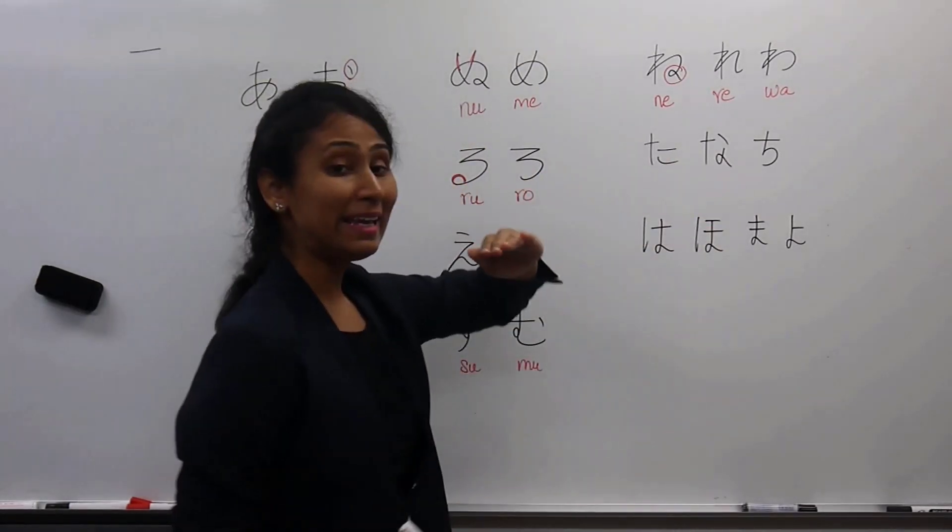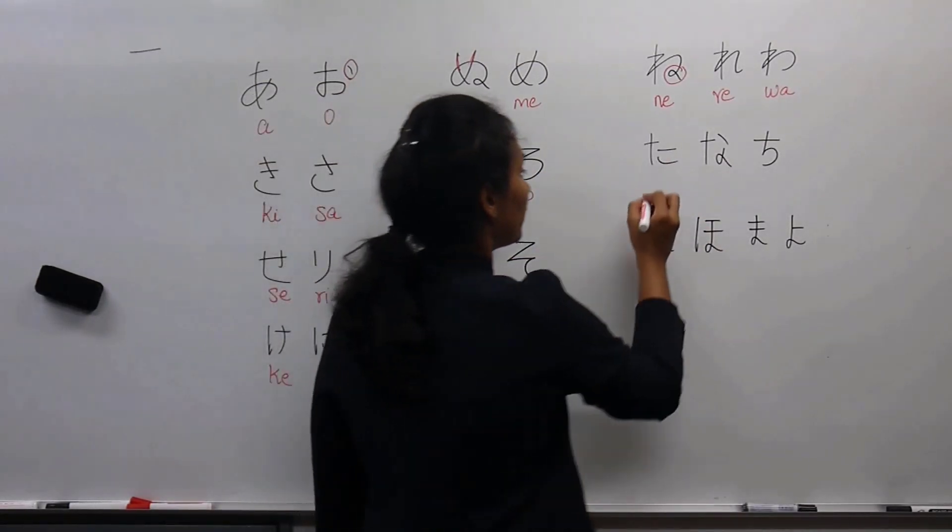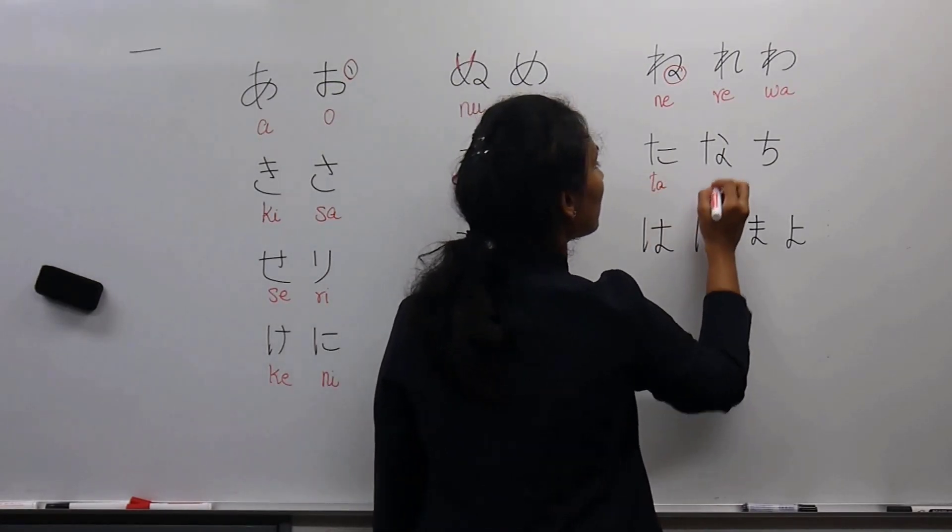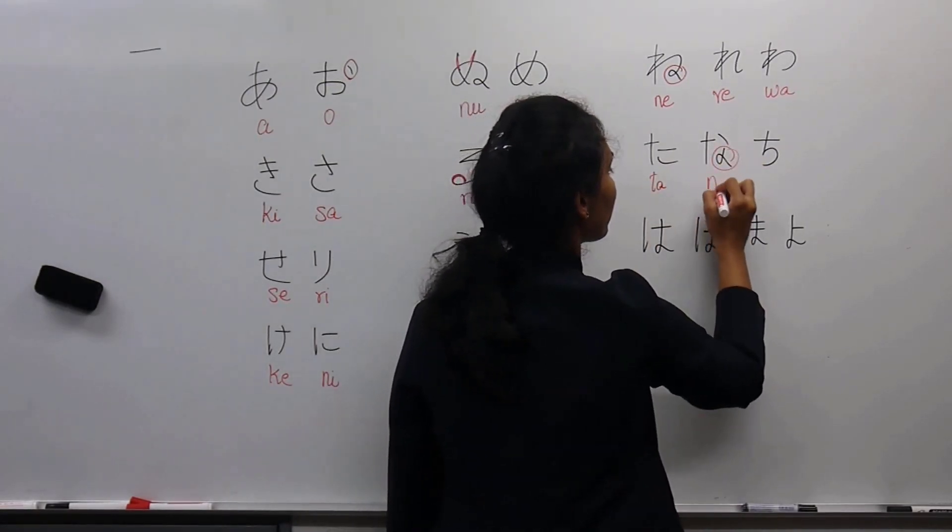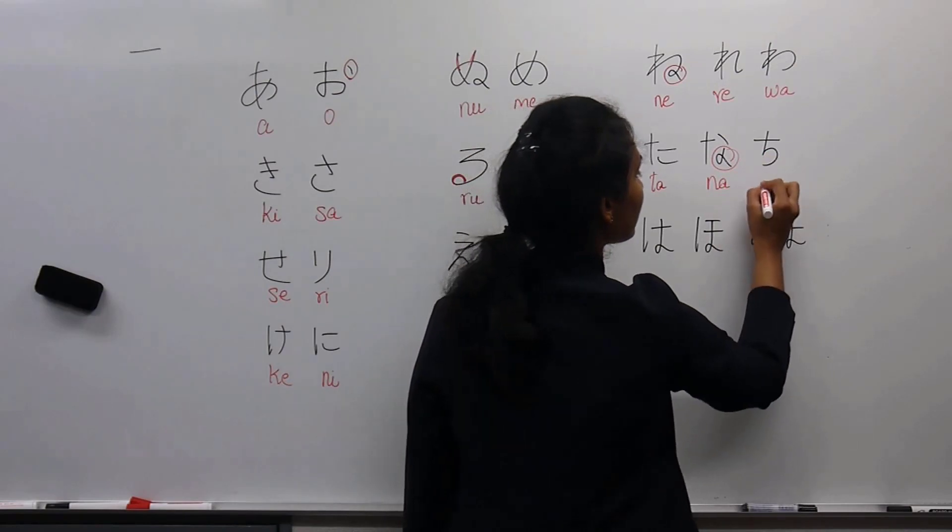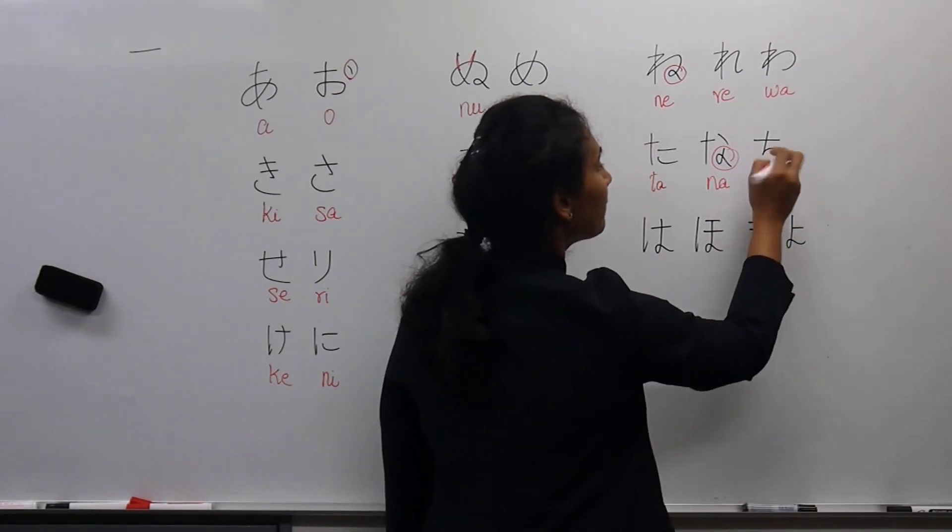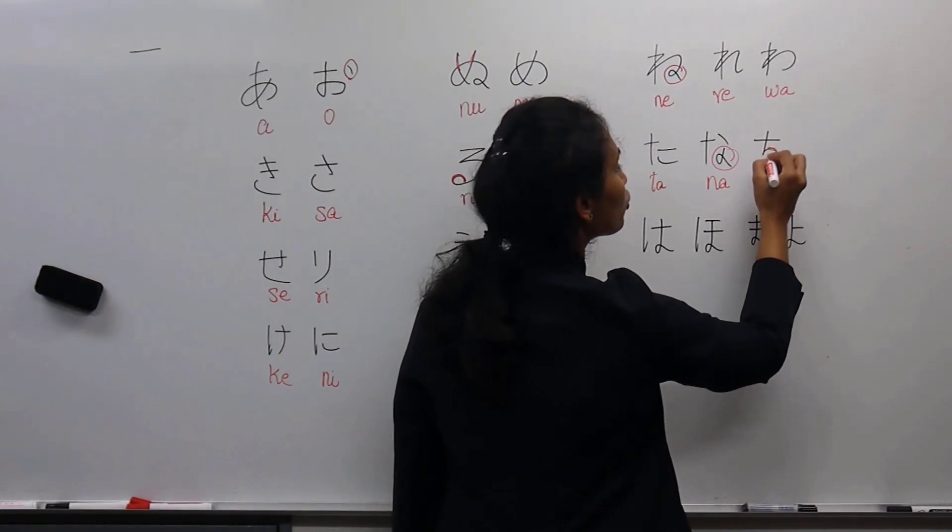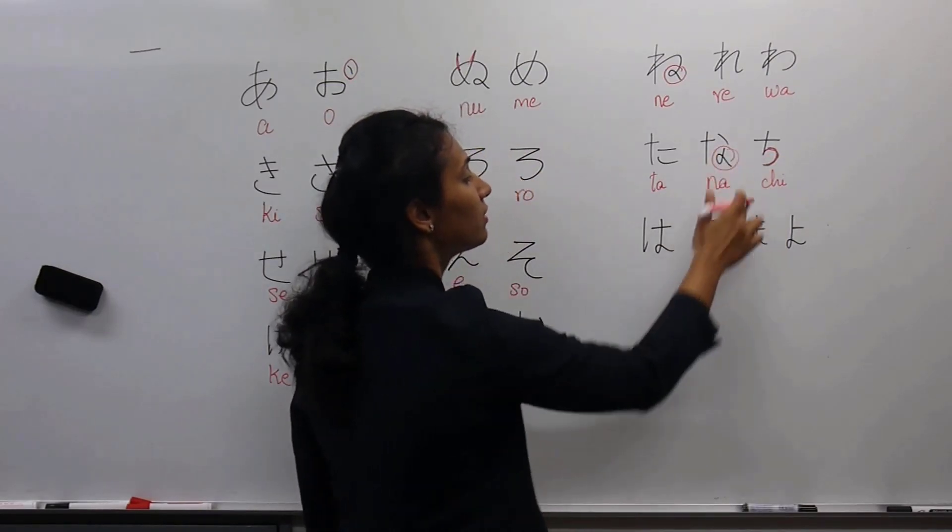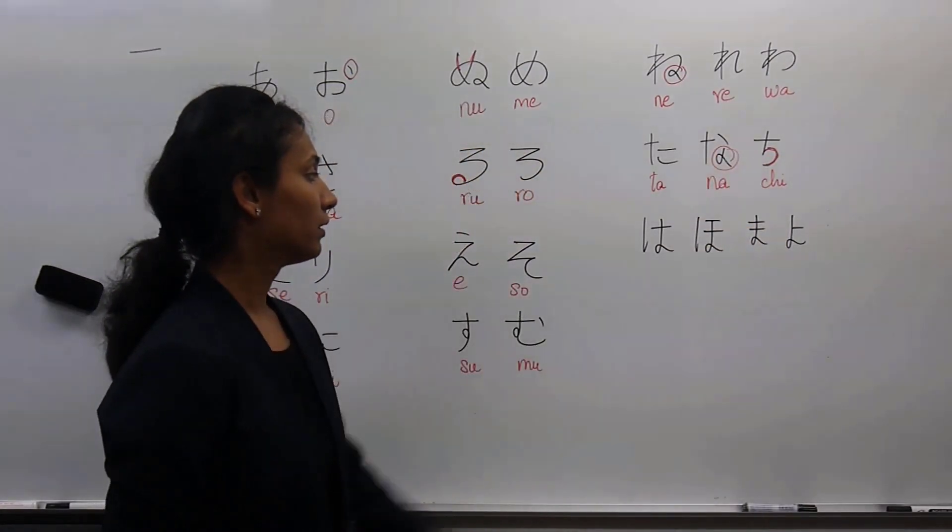This is the 'ta' kind of characters. This is 'ta.' This one with a knot here, so it becomes 'na.' And this is 'chi.' Remember that as this is the chin, so 'chi' is the sound for this character.